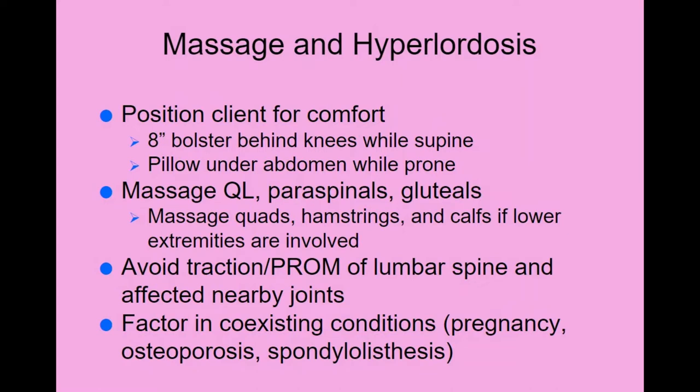For hyperlordosis, massage the quadratus lumborum (QL), paraspinal muscles, gluteal muscles, quads, hamstrings, and calves — any muscles involved in balancing or keeping the mid-portion of the body upright are likely tightened. Avoid traction of the lumbar spine and passive range of motion to the affected area and nearby joints, including the hips.